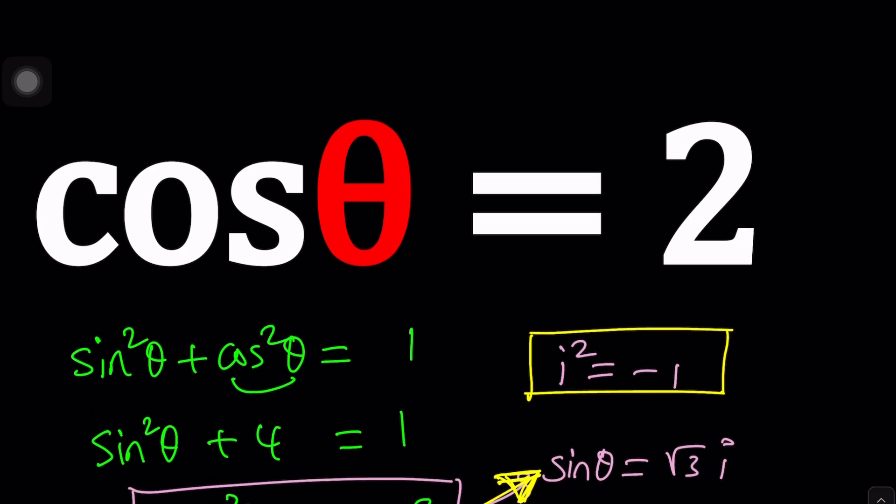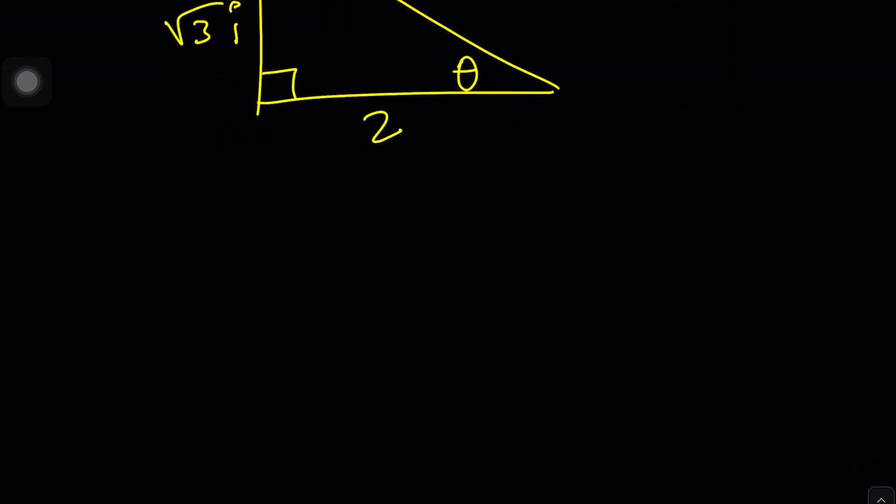Thanks to Euler, we have a form called polar form. There is a formula known as Euler's formula, which is e to the i theta equals cosine theta plus i sine theta. This is beautiful because, for example, if you replace theta with pi, you would get e to the i pi equals cosine of pi plus i sine pi.